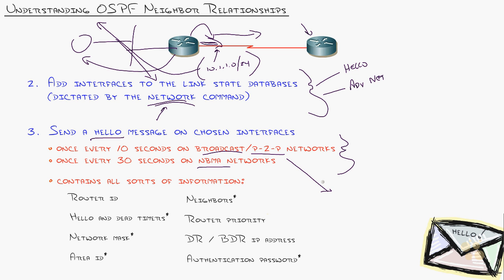That may seem insignificant, but mismatched hello timers are the number one cause of OSPF neighbor relationship failure. When sending the hello message, it's not just saying hello - it sends an envelope full of information. The items with asterisks must match between routers: hello and dead timers, subnet mask on the interface, area, and authentication password. Otherwise, the neighbor relationship won't form. This slide represents your number one troubleshooting resource for OSPF.